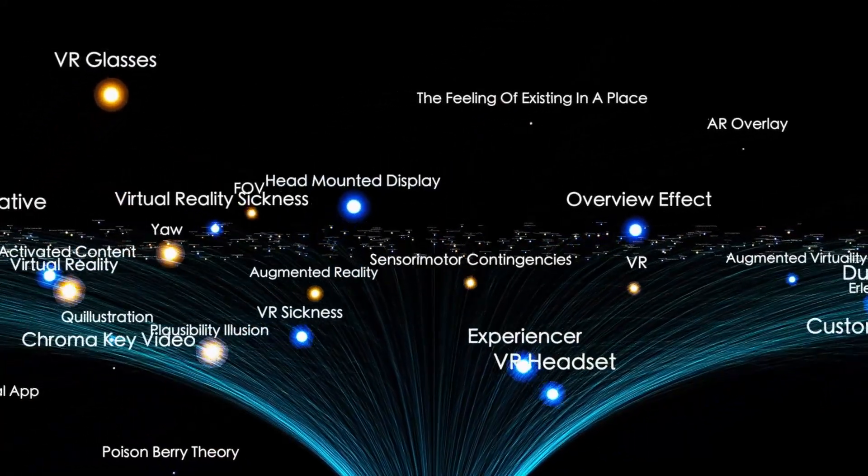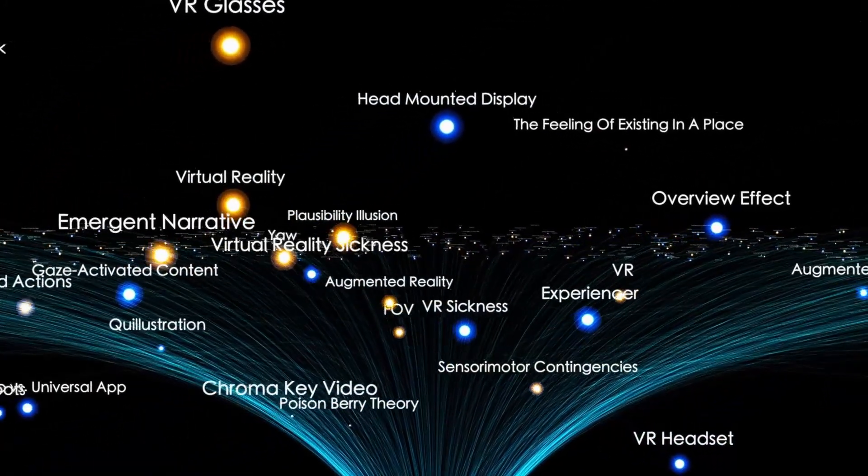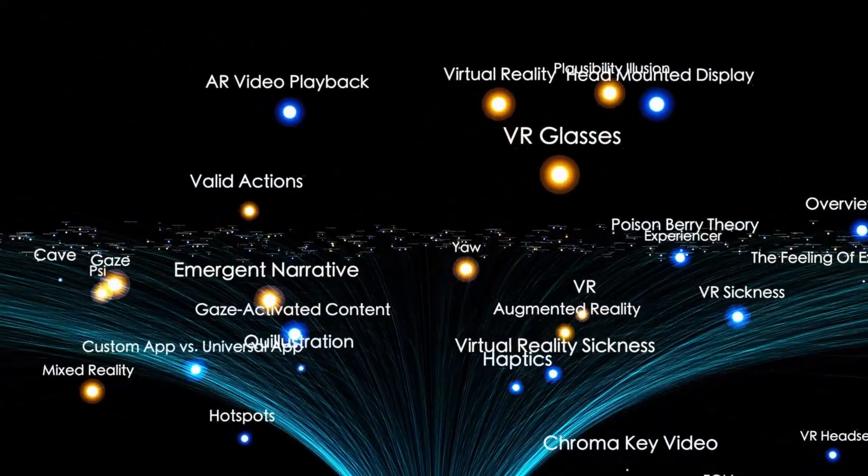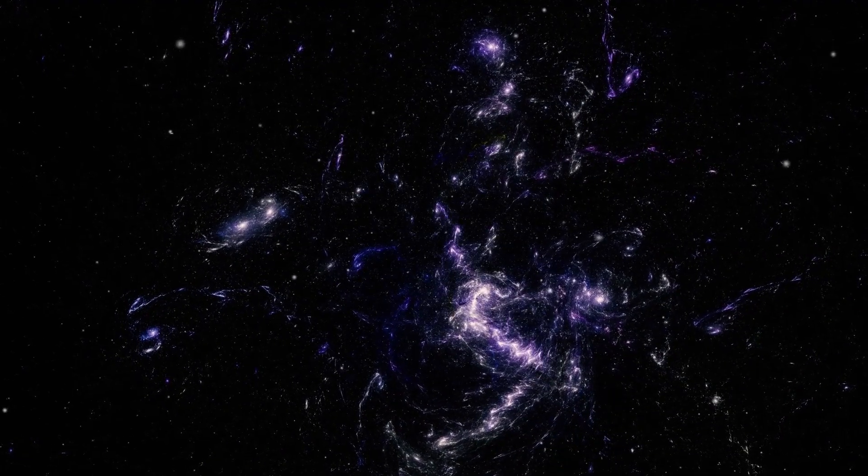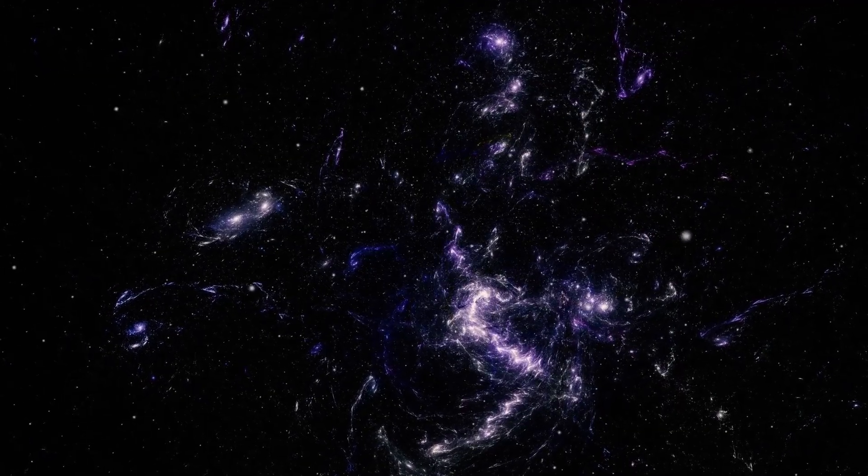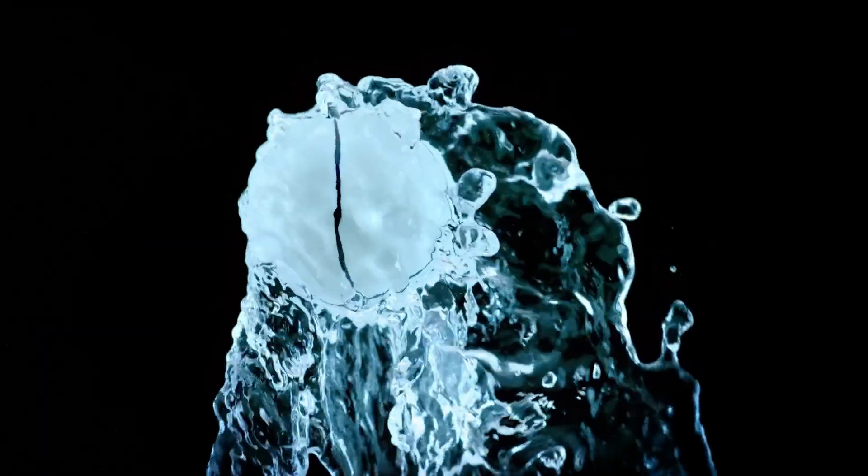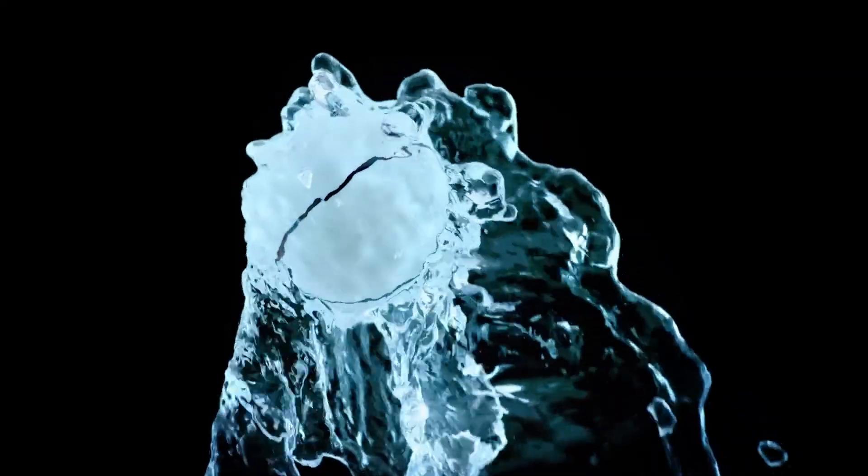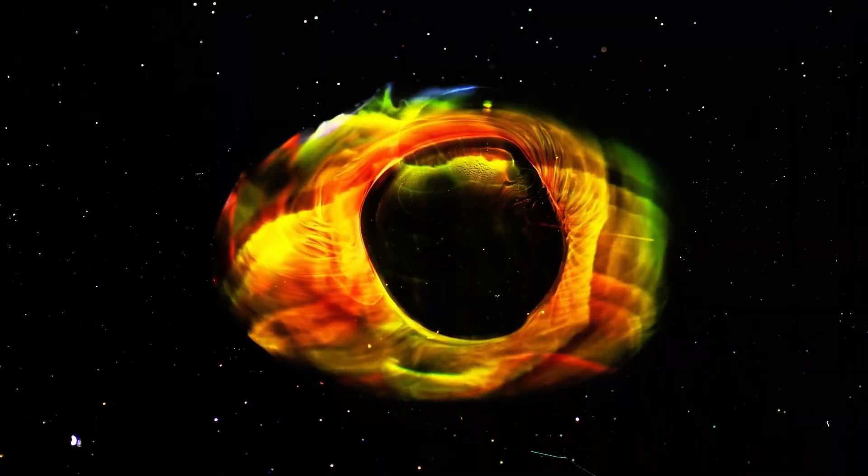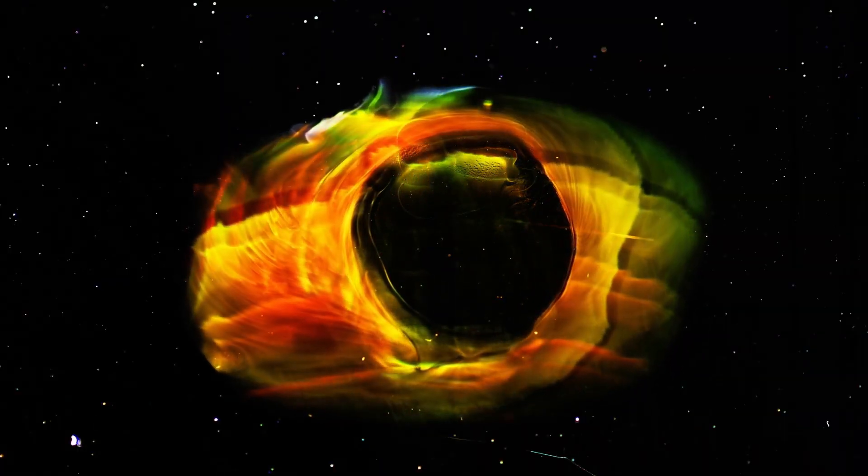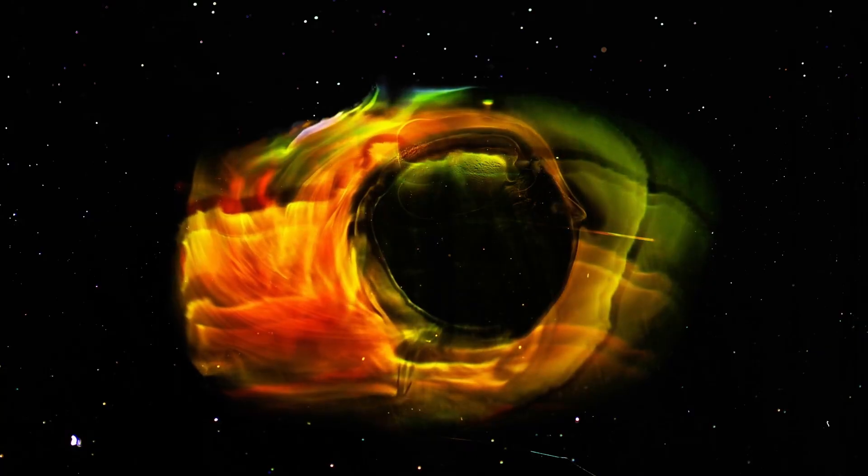But on September 2nd, Voyager responded. Its signal was steady, stronger than expected, and showed signs of alignment completion. The probe had accepted the command. Against every expectation, Voyager had come back online—not just to listen, but to engage. No one at NASA said it aloud, but the shift was obvious. Voyager, our oldest machine, was no longer just drifting. It was now pointing toward something we didn't understand.